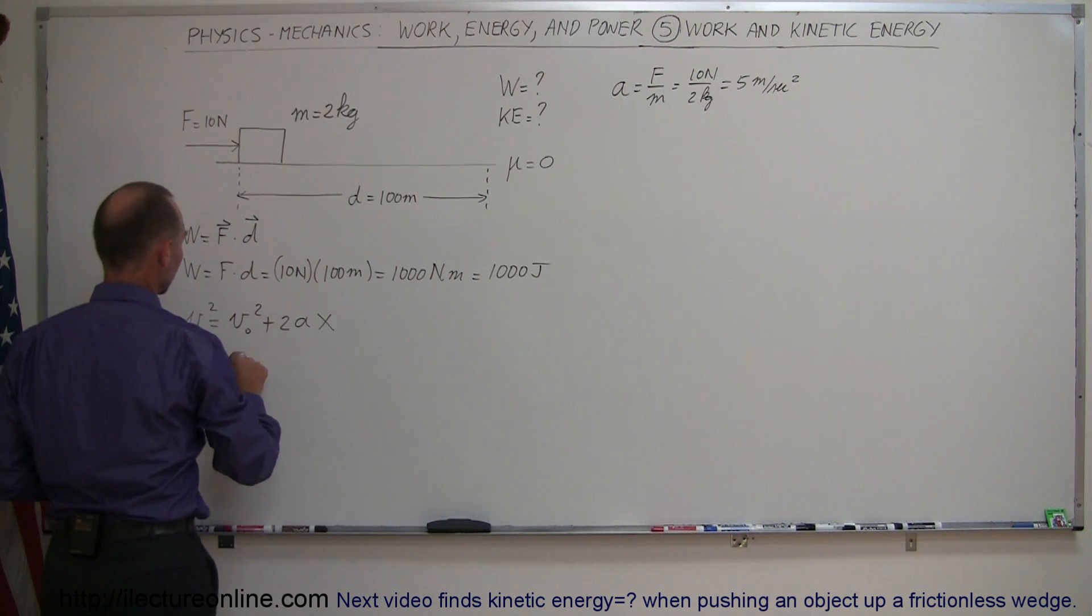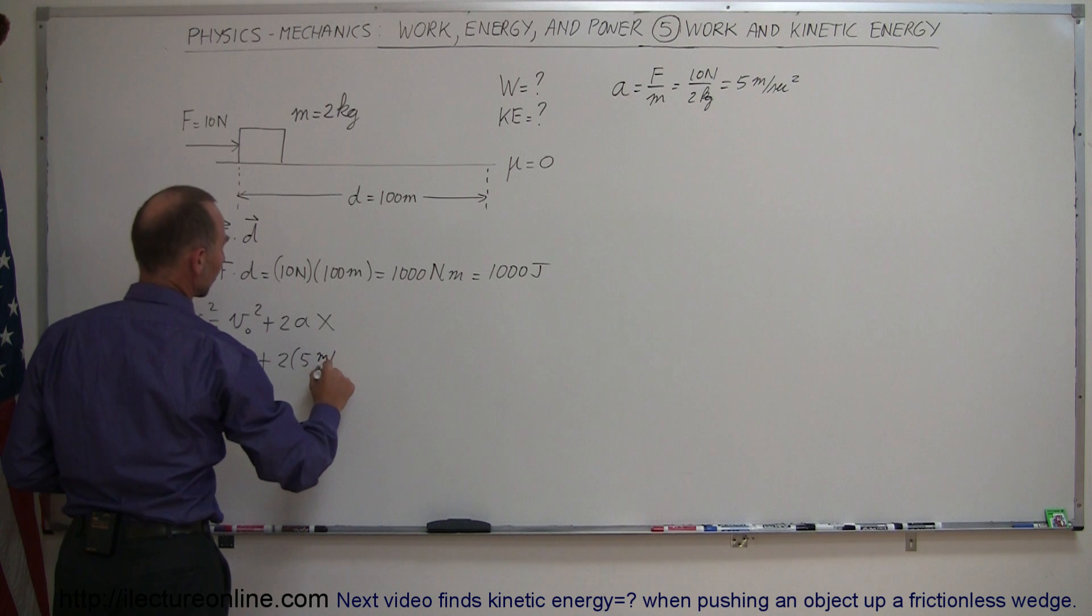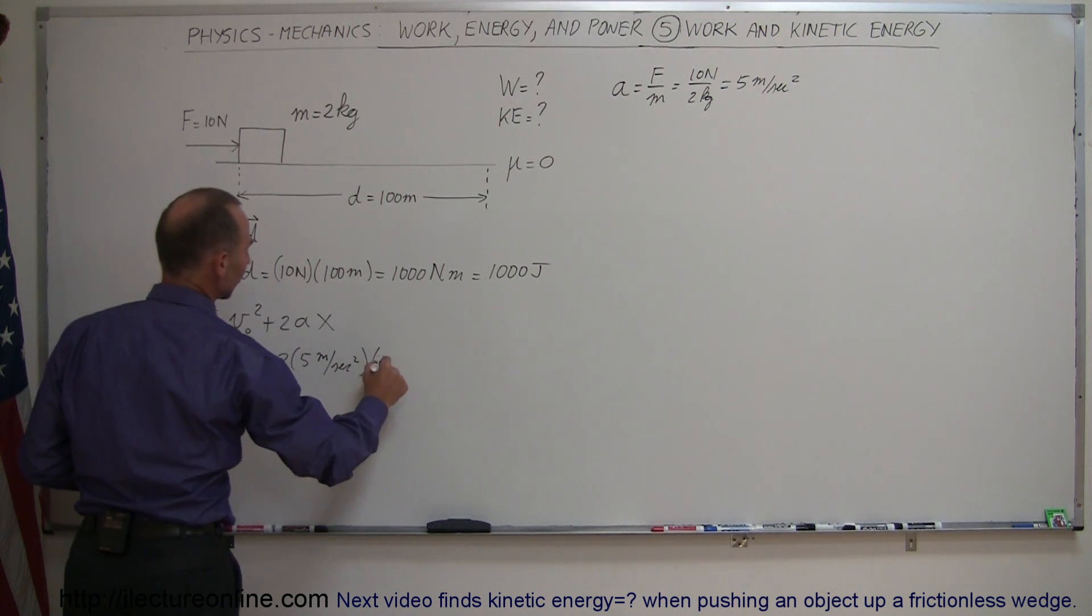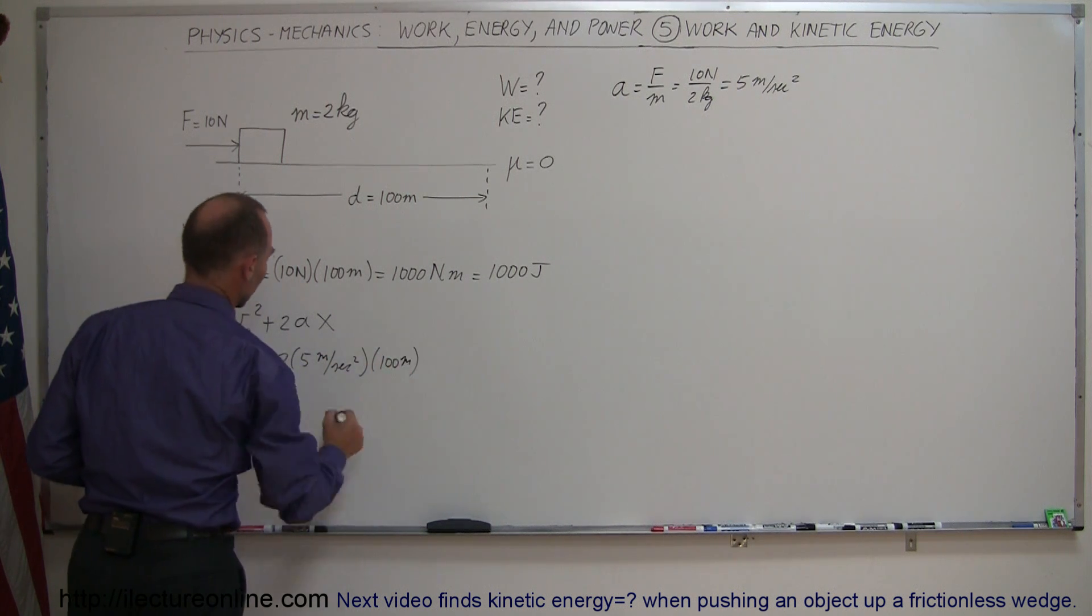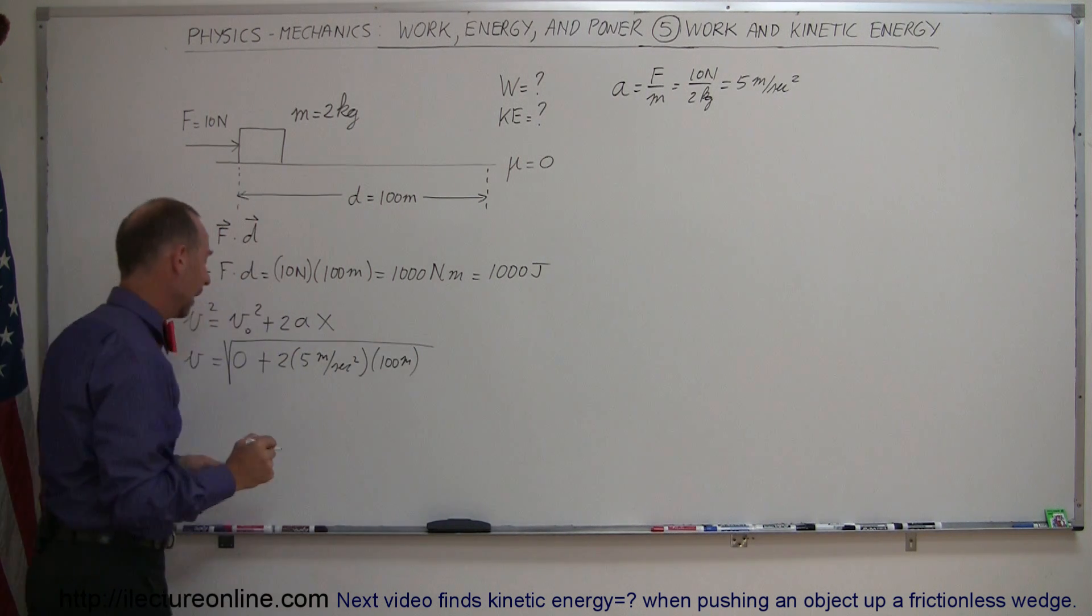The initial velocity would be 0, so this would be plus 2 times 5 meters per second squared times the distance of 100 meters. And that will be equal to v squared. If we take the square root of both sides, we get that.